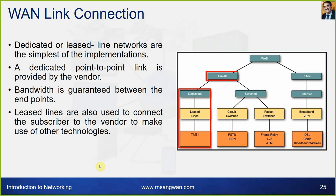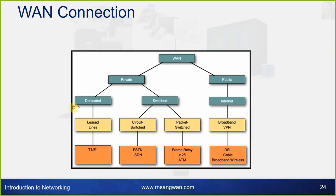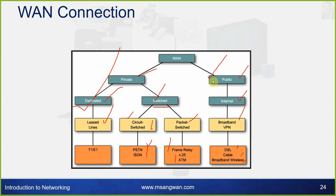WAN connections can be private or public, and dedicated or switched. Dedicated means leased line. Circuit switched means PSTN or ISDN. Packet switched includes Frame Relay. For public connections, options include the internet, broadband VPN, DSL, cable broadband, and wireless. This single slide summarizes WAN categorization and the underlying technology being used.